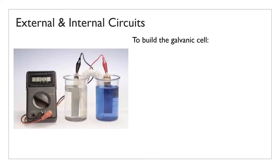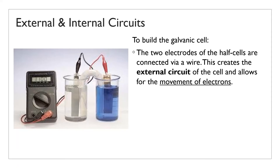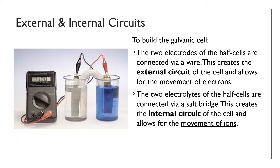Once you have built your half cells, you connect the two electrodes using a wire — sometimes via a voltmeter — creating an external circuit that allows for the movement of electrons. You also need to connect the two electrolytes via a salt bridge, which allows ions to move through the solutions — this is the internal circuit of the cell. The cell always has an external circuit for electron movement and an internal circuit for ion movement. The salt bridge is usually a piece of filter paper soaked in an ionic solution, normally potassium nitrate, connected between the two solutions.